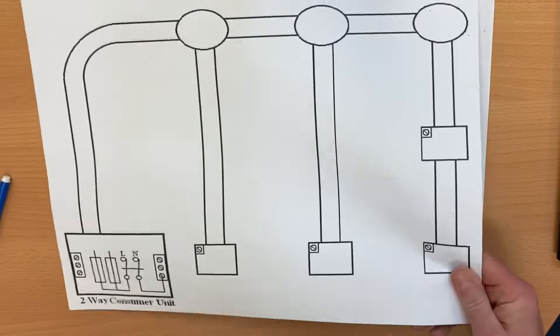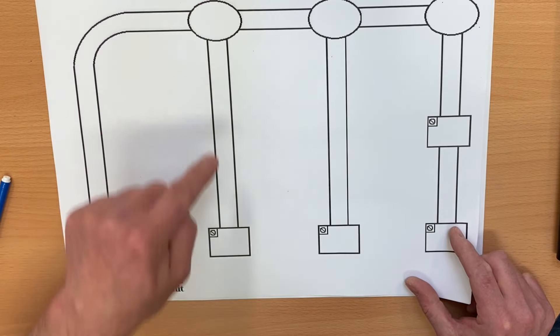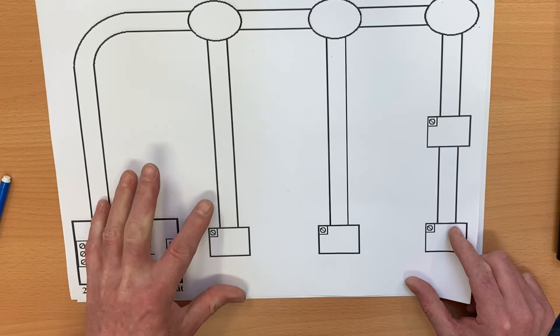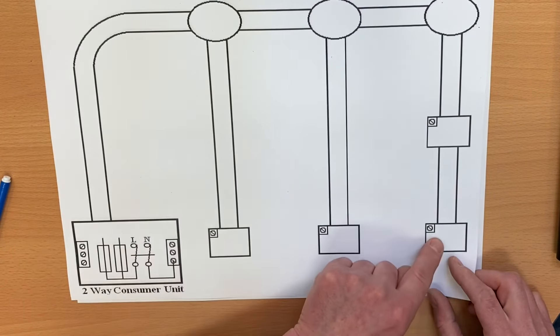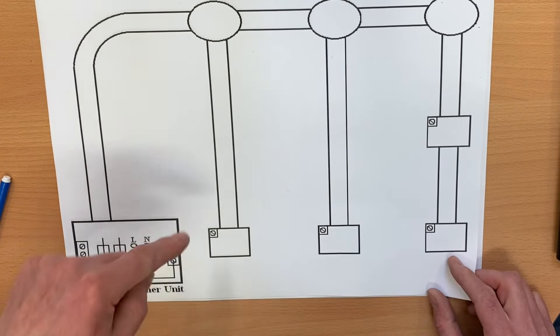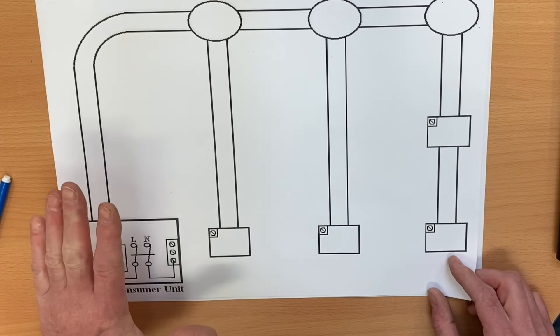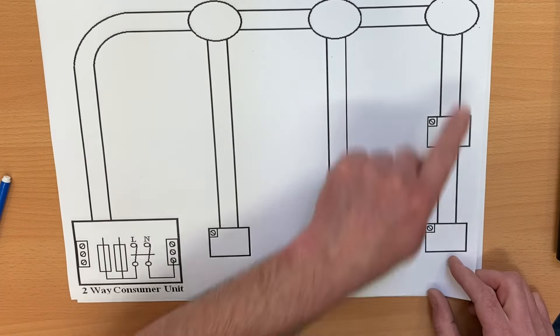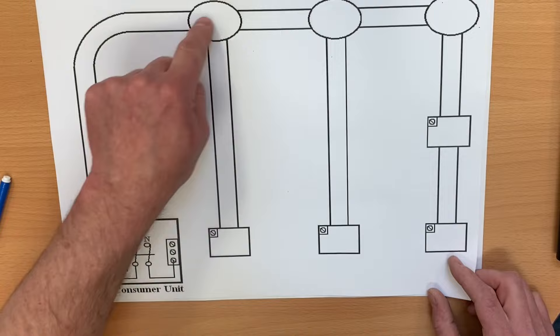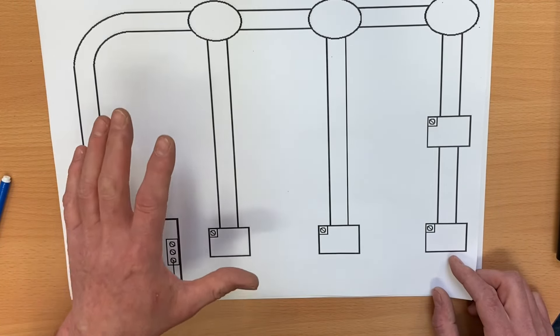We will also have this system here where I can have, say, light one controlled by switch one, wire it, then have light two controlled by switch two, light three controlled by switch three. We can see how we can bring the system through without having to return to the consumer unit every time to pick up our permanent line. We can also make these two-way, two-way and intermediate, two-way with two lights. There's plenty of opportunities to increase the knowledge through the wiring diagrams that we can produce in later videos.